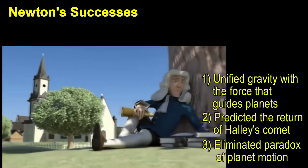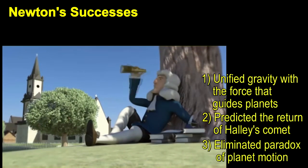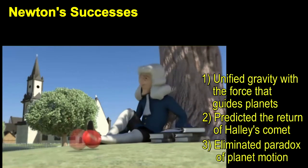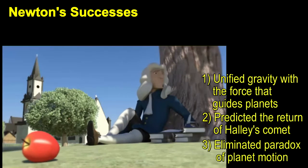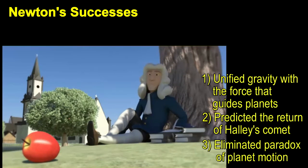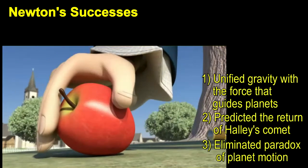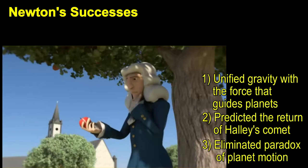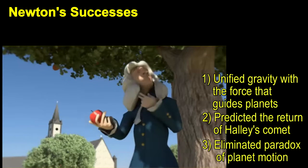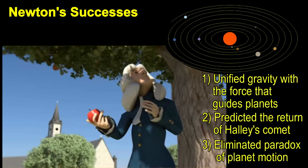For instance, Newton's theory of gravity achieved unifying success when he explained the motion of the planets in terms of the same force that causes an apple to fall to Earth. His theory achieved good prediction success when it predicted the return of Halley's comet and the eclipses of the Moon. It eliminated the paradox of why planets seemed to wander aimlessly in the sky.